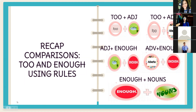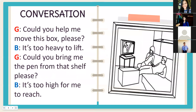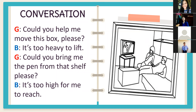Let us now proceed to our lesson for today. I want you to look at this picture. What do you notice? They are watching TV. There's a girl and a boy in the picture, and there is also a box.